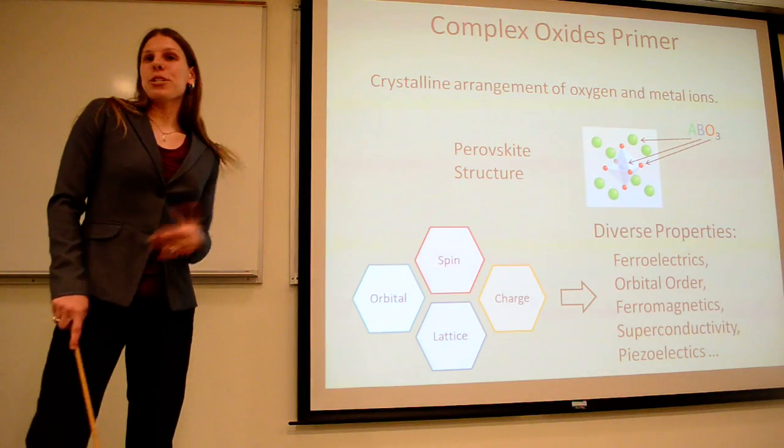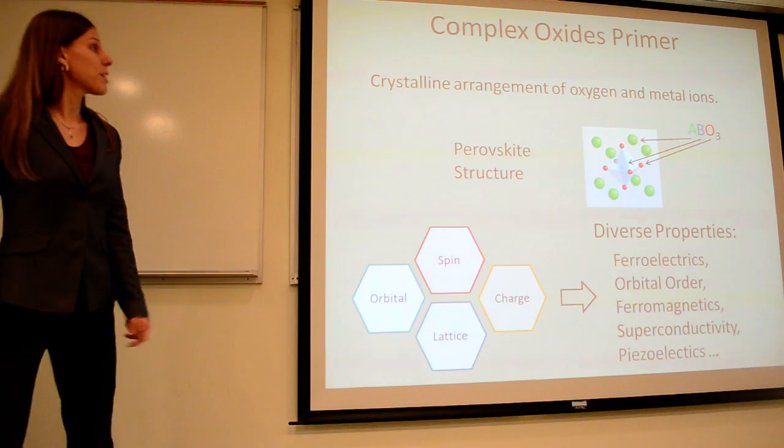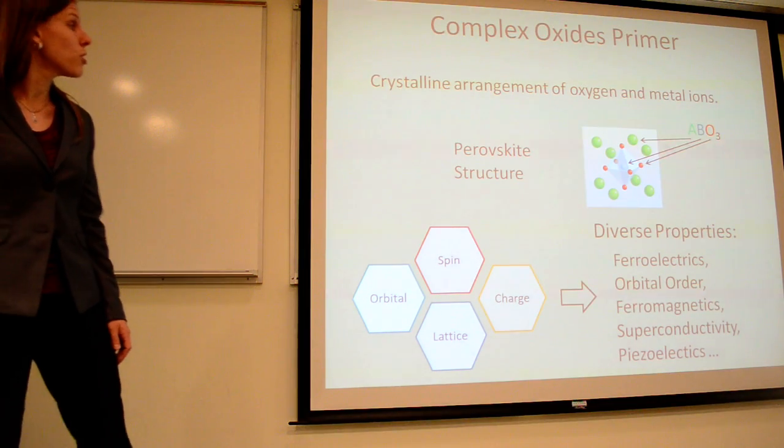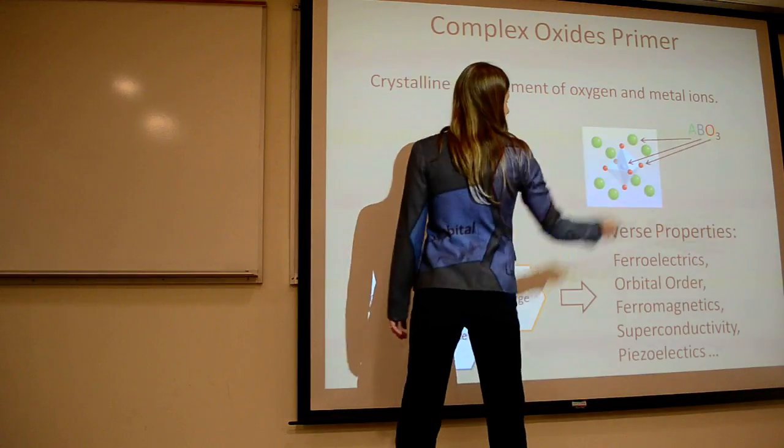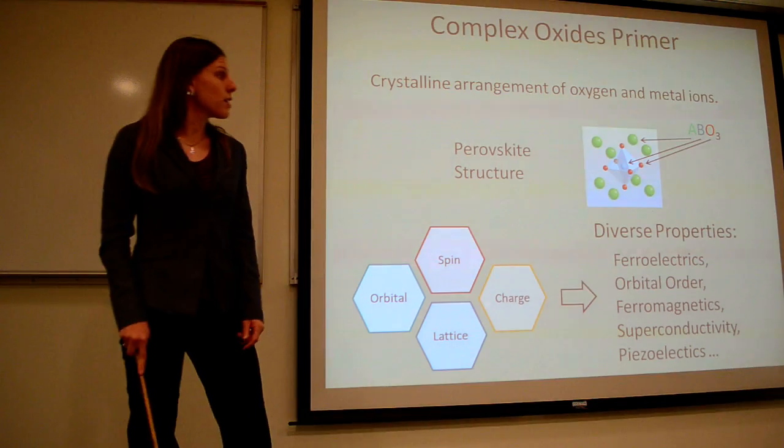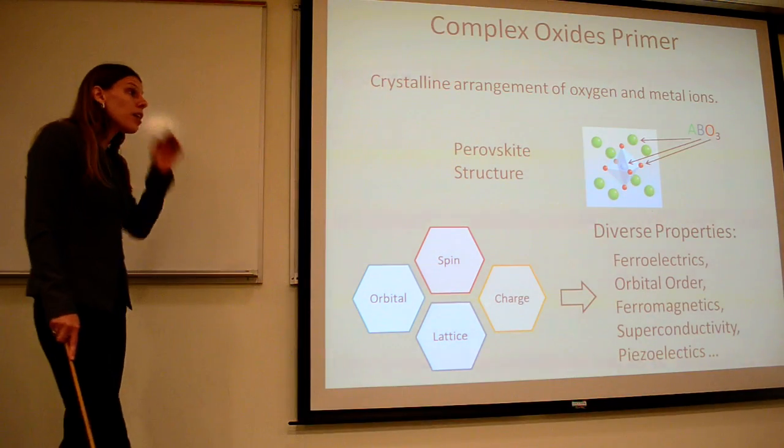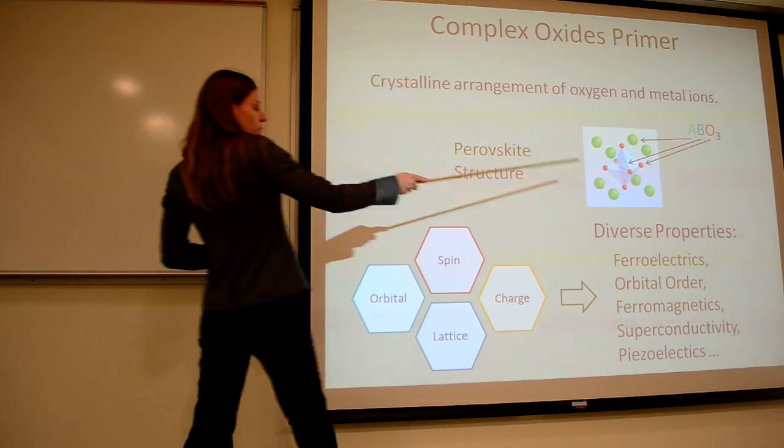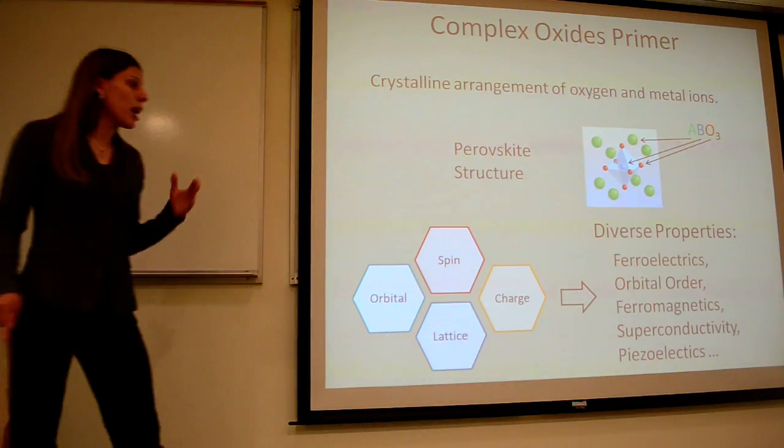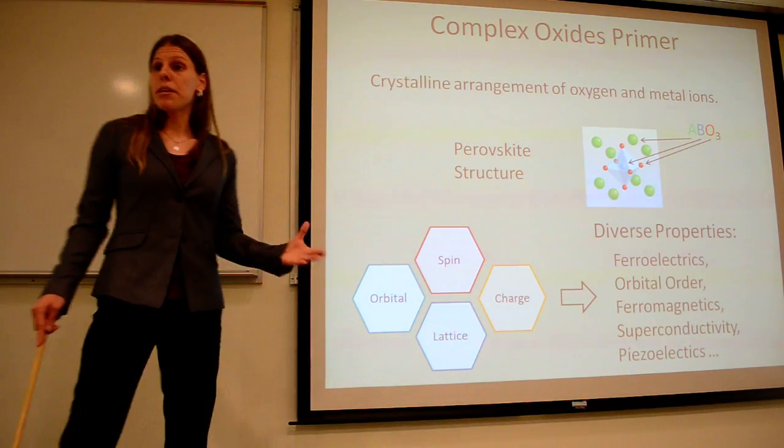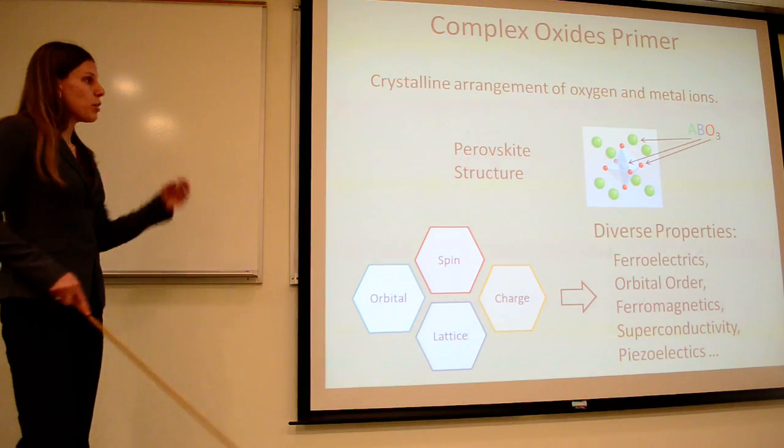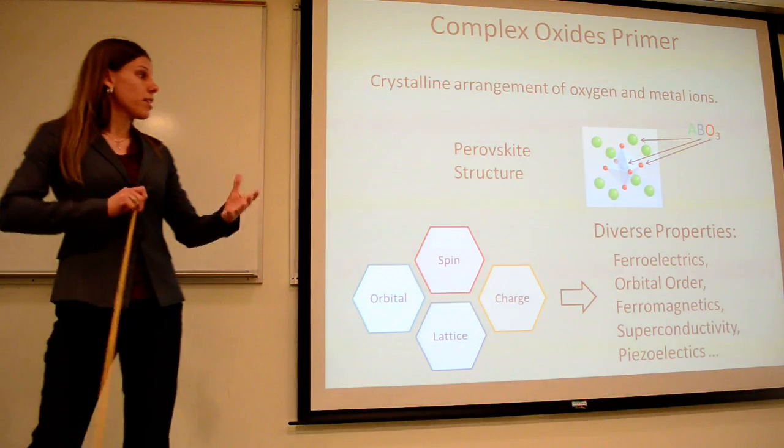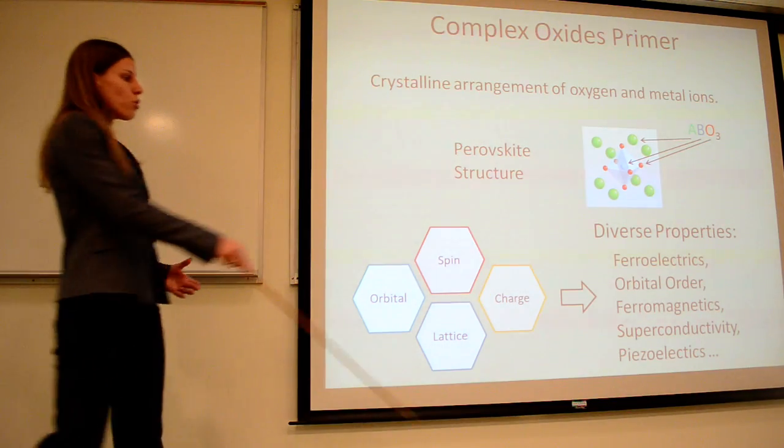So first, I'm going to return to the complex oxide materials and give you a little bit of a primer on them. The complex oxides are a crystalline arrangement of oxygen and metal ions. One of the most common crystal structures is the perovskite structure, which has this ABO3 formula. So A and B are going to be your metallic ions and the oxygen is going to form the lattice in between. And what's really nice about this particular structure is that just by changing what your A and B ions are, you can get a very diverse array of properties in these materials. So everything from ferroelectrics, ferromagnetics, superconductivity, piezoelectrics, and so on and so forth. And this is because of the interplay when you have the different metallic ions. They have different spin, charge, slightly different sizes of lattice and different orbitals. And the way these things come together and make the crystal structure controls these different properties.